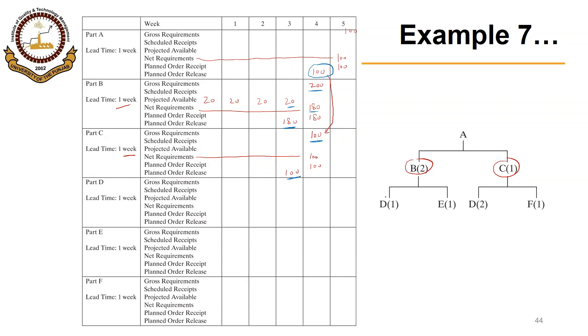Next is component D. Now this D is the child of B and is also required in C. So its requirement is coming from both B and C. Based on the requirement from B, that was 180. So we need 180, plus 2 D's are required for each C. For C we have 100, so 100 times 2, that will be 200. So we need 380 D's in the beginning of period 3.